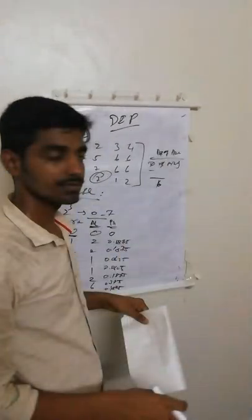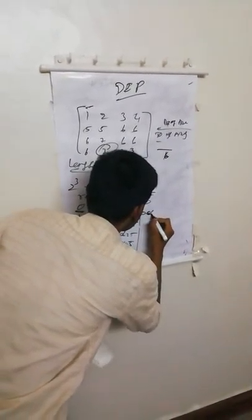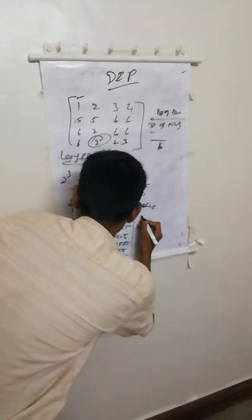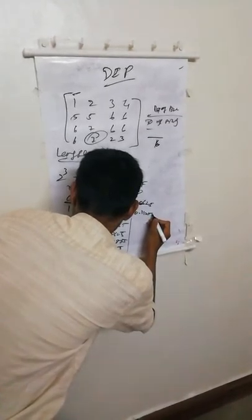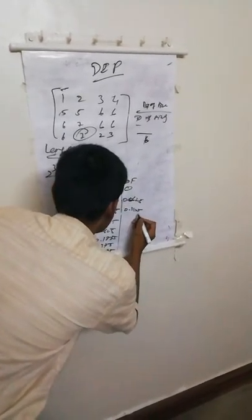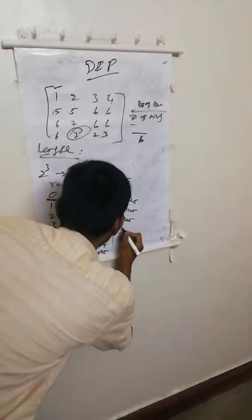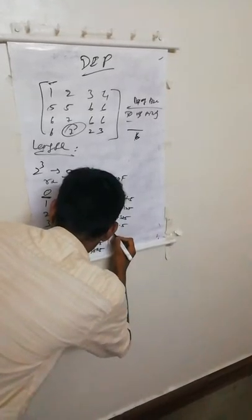Then we have to calculate the cumulative distribution function (CDF). The CDF is calculated by cumulatively adding the probabilities. The values are computed by summing up each successive probability, giving cumulative values: 0, 0.0625, 0.3125, 0.375, 0.5, 0.6875, and 1.